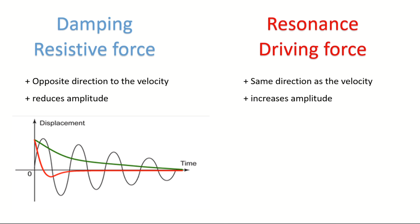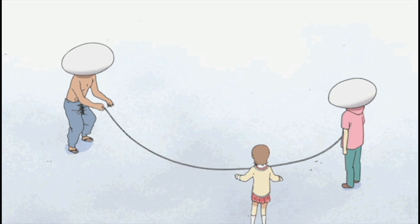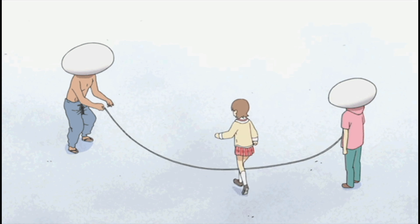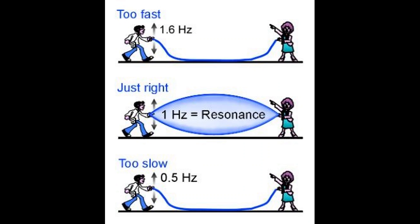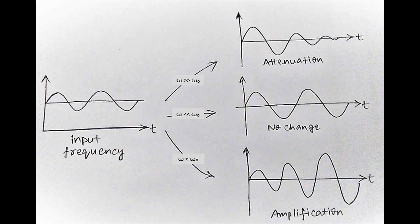Now another simple example where you experience resonance is the jump rope. If you rotate your arm slow or fast, the rope cannot gain a big amplitude. You can feel by yourself there is a precise frequency rotating your arm, even with small force the jump rope can have a big amplitude. This is resonance. And the frequency you use is the natural frequency of the jump rope.